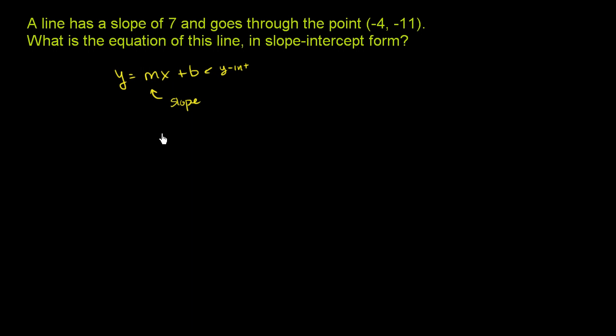Now, in this problem right here, they tell us the slope. They tell us that a line has a slope of 7. So we know right from the get-go that m is equal to 7.